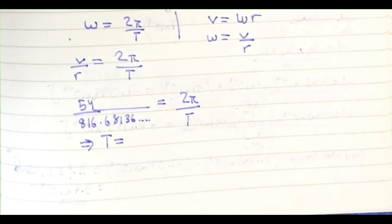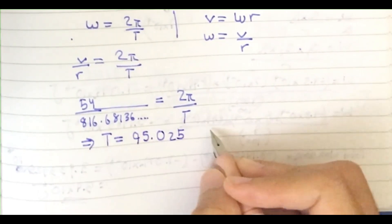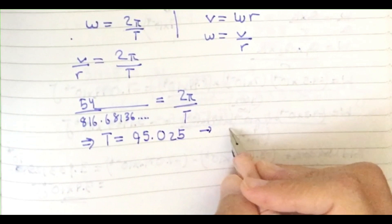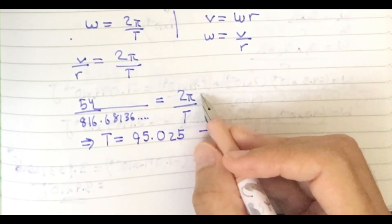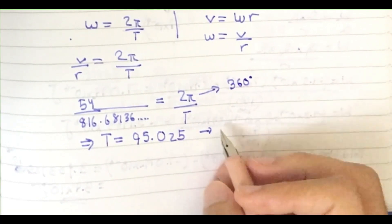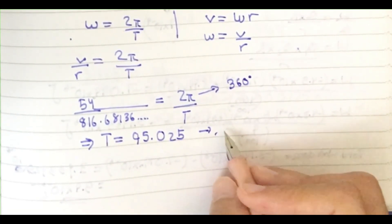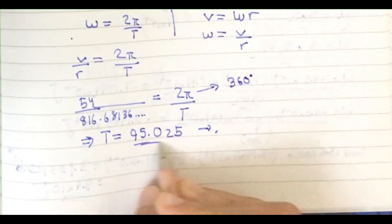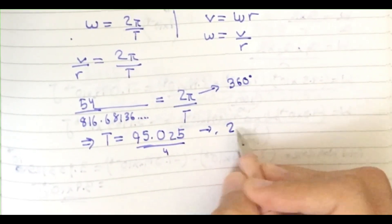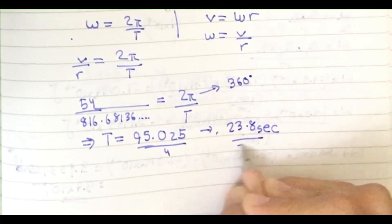2π represents 360 degrees, so I can just divide by 4 and then I will get my answer. If you divide by 4, you get 23.8 seconds. This is your answer.